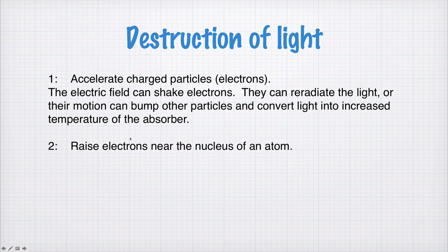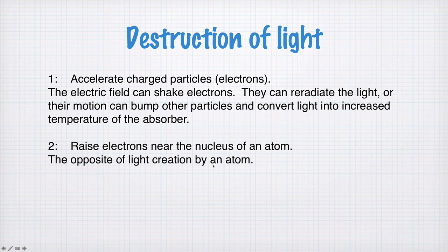A second way would be to raise electrons near the nucleus of an atom. What I mean by that is a photon comes in to an atom and interacts with an electron, and that electron is raised to a higher energy level, and the photon is then gone. So this is the opposite of light being created by an electron dropping an energy level in an atom.